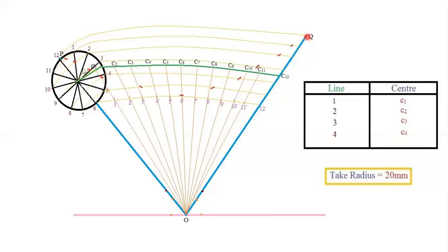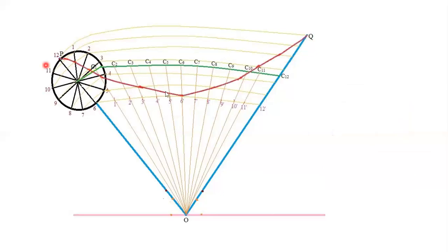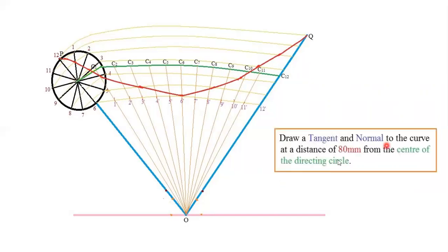Once you cut all the arcs you'll get an image of intersection points. Join all the arcs with a smooth curve — this smooth curve is called the hypocycloid curve, which is the path traced by the rolling circle. The next step is to draw the tangent and normal to the curve at a distance of 80 mm from the center of the directing circle.